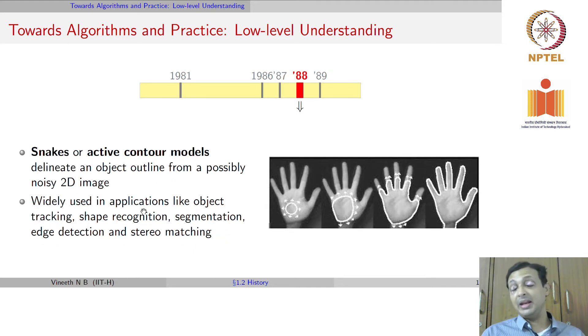In 1988 came what are known as snakes or active contour models which helped delineate an object outline from a potentially noisy 2D image. It was widely used in applications like tracking, shape recognition, segmentation, edge detection, and so forth.